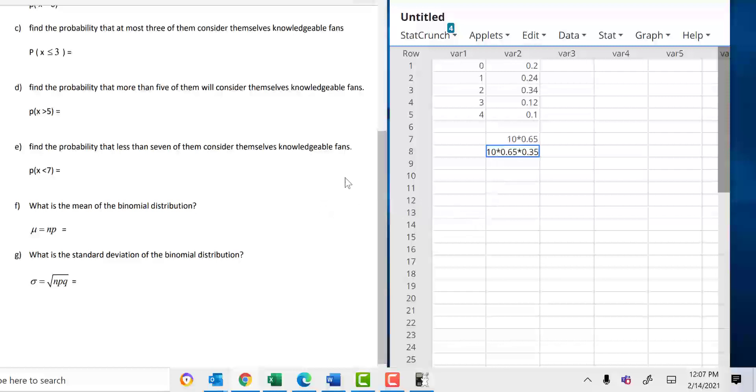And this is how you can use StatCrunch to find binomial probabilities. Feel free to use it if that's more convenient for you.